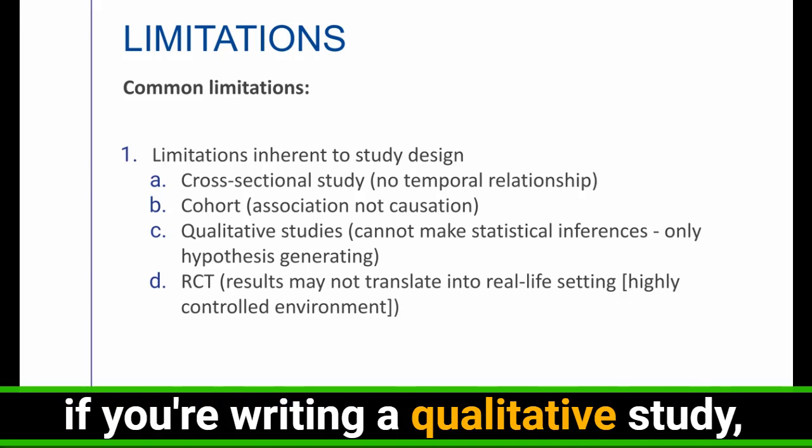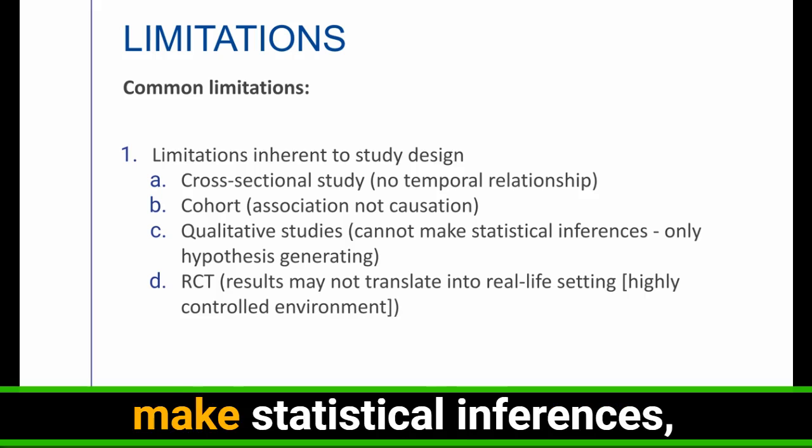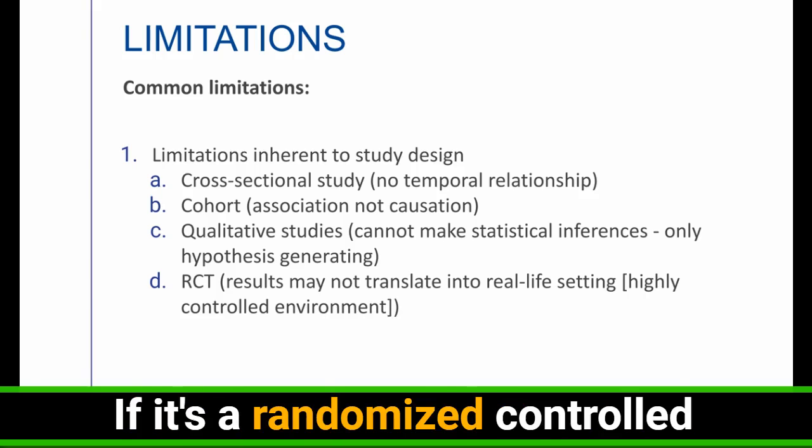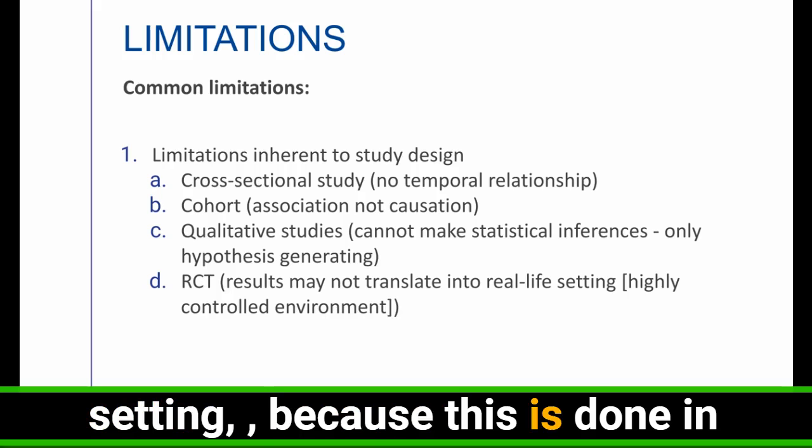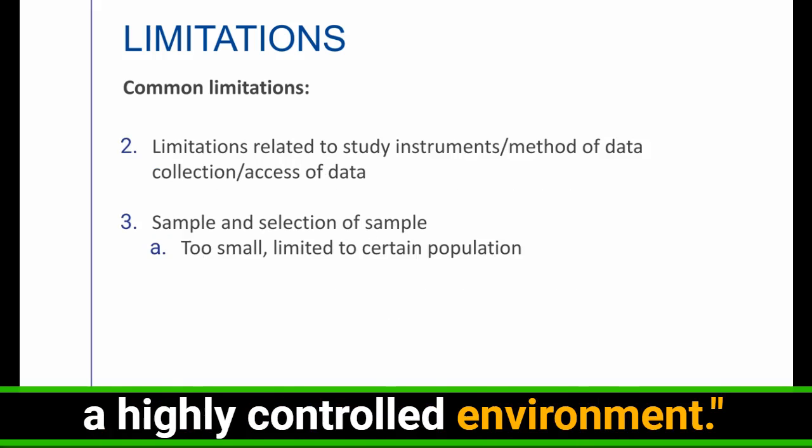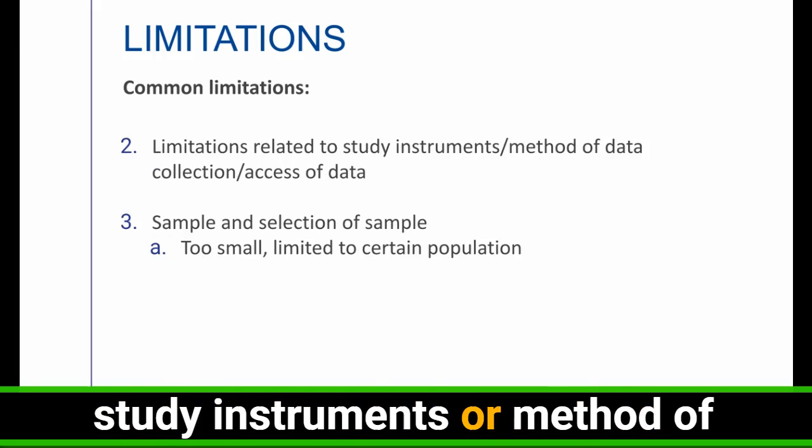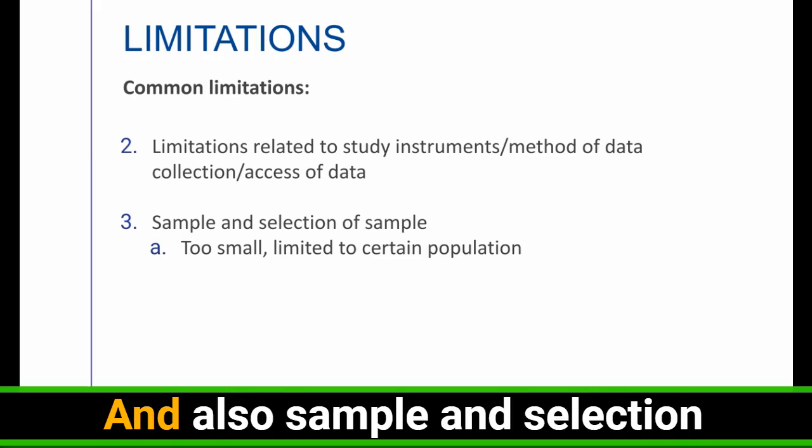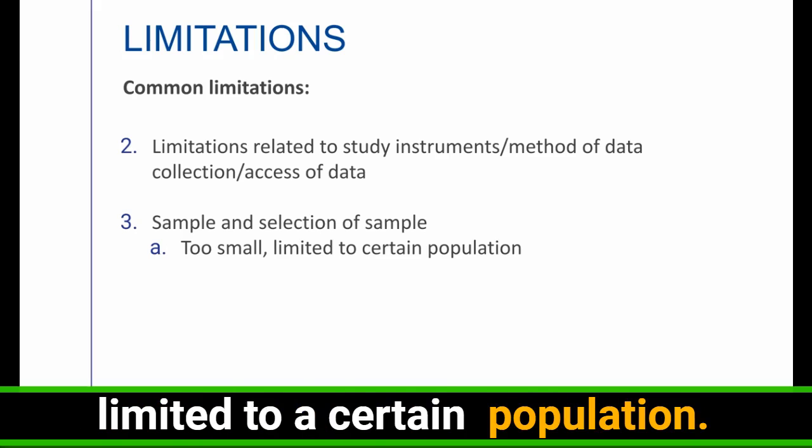If you're writing a qualitative study, you can say, because this is a qualitative study, we cannot make statistical inferences, only hypothesis generating. If it's a randomized controlled trial, you can say that results may not translate into real life setting because this is done in a highly controlled environment. Other limitations include limitations that are related to study instruments or method of data collection or access of data, and also sample and selection of sample, too small or limited to a certain population.